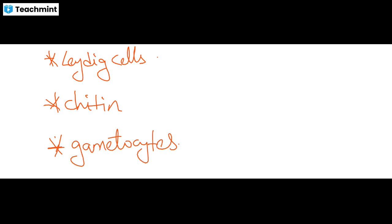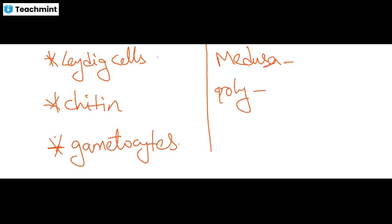Next question: in cnidarians, there are two forms — medusa and polyp. The medusa is the sexual form and the polyp is the asexual form in cnidarians. Medusa is the sexual form.